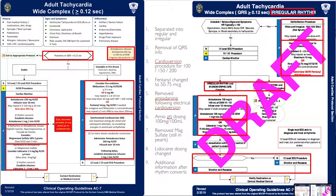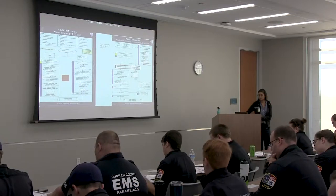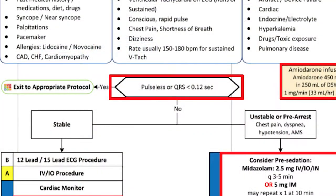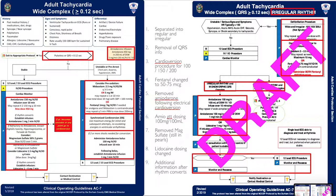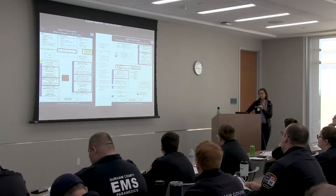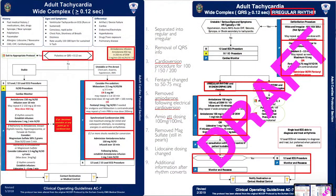Wide complex irregular rhythm — this is a new protocol since we've separated wide complex into regular and irregular. Removal of QRS information. Cardioversion with standardized voltages, can increase further. Fentanyl dosing changed to 50 to 75. Removal of amiodarone following electrical cardioversion. Same amiodarone dosing 100 in 100. Magnesium sulfate was removed from the main protocol but will still be in the pearls. Lidocaine dosing changed from 1.5 to 1. Same post-conversion information.